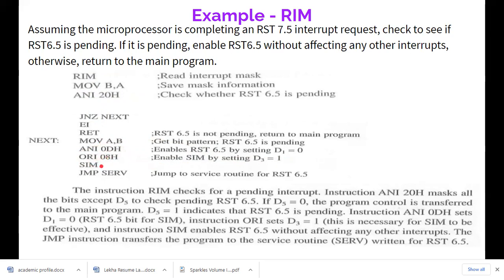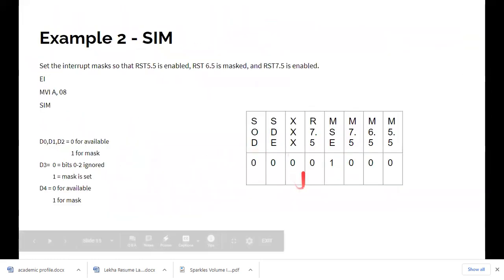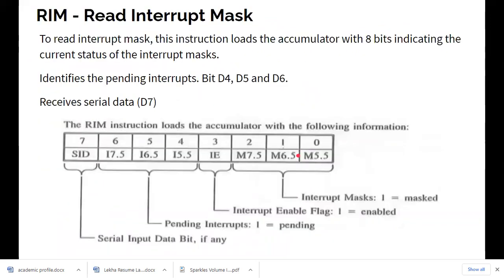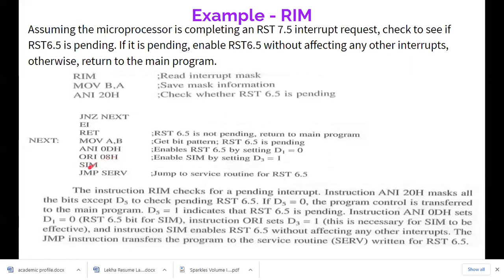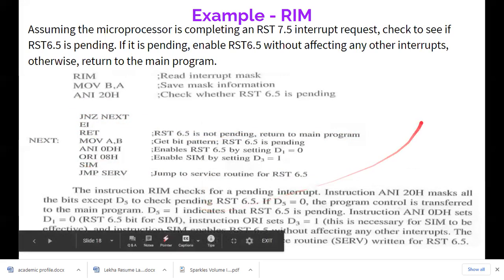Then execute ORI 08h to set D3 (MSE) to one, making the SIM instruction effective. Execute SIM to apply the new mask, enabling RST 6.5. Then jump to the service routine for RST 6.5. If RST 6.5 was not pending (result was zero), enable the interrupt and return to the main program.